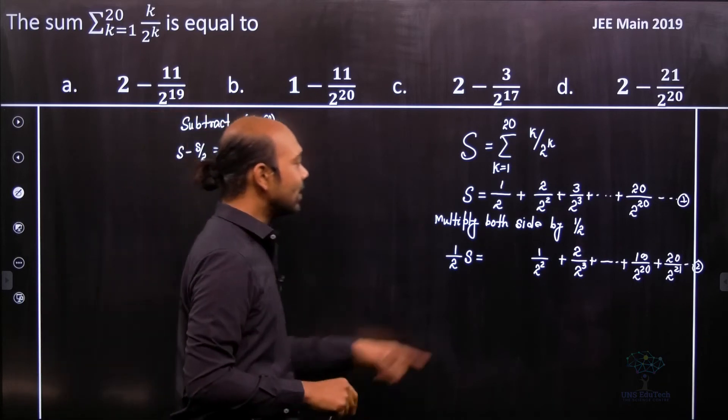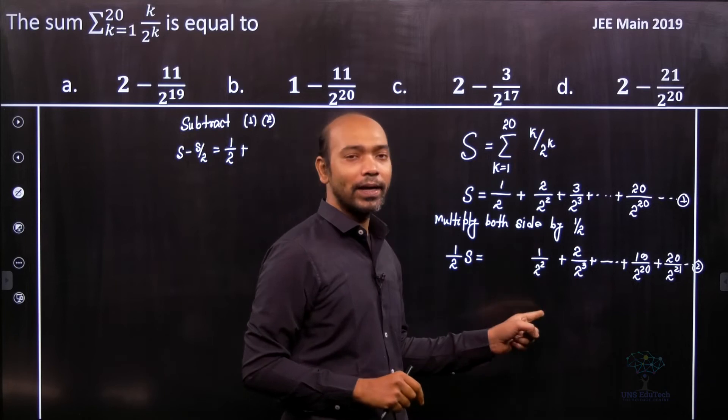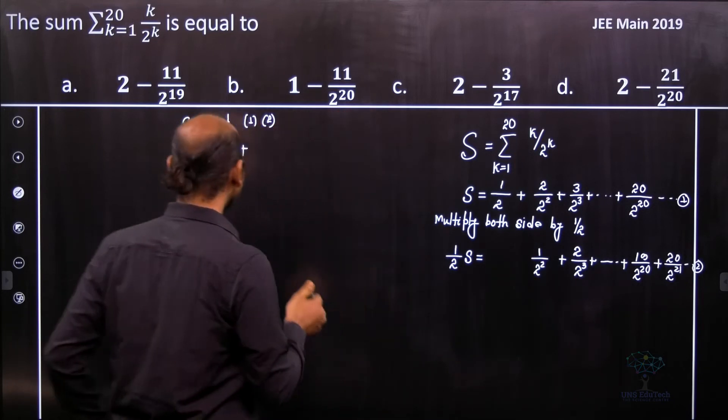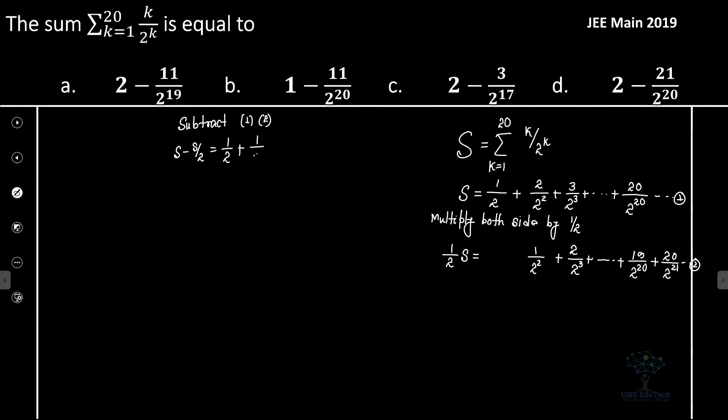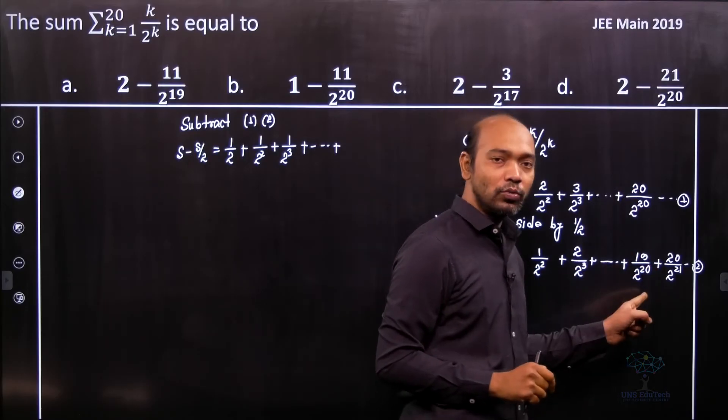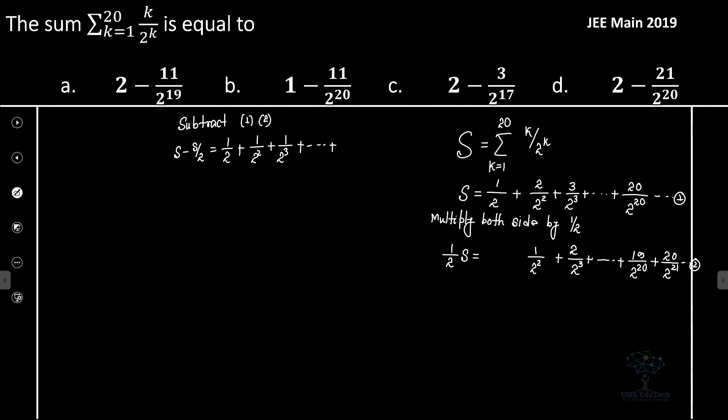Plus it is 2 by 2 square minus 1 by 2 square, so therefore it is 1 by 2 square and so on. So it's 1 by 2 square plus 1 by 2 to the power cube plus dot dot 2. Obviously we'll see that 19. So it's 1 by 2 to the power 20. So 1 by 2 to the power 20 minus 20 by 2 to the power 21.